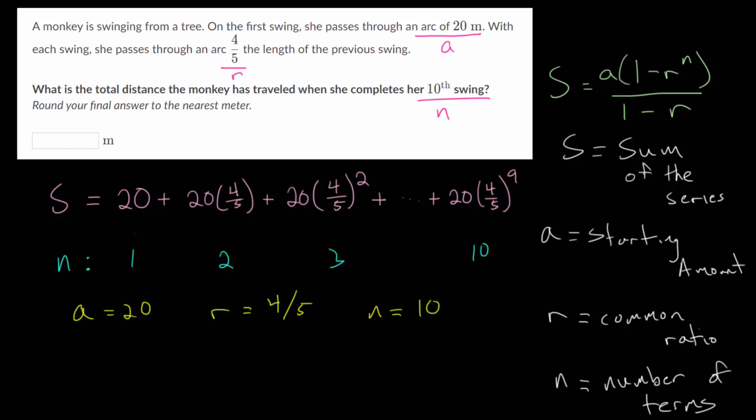So our sum, if we just plug everything in, it will be 20 multiplied by 1 minus 4 fifths, all raised to the 10th power. And then that's divided by 1 minus 4 fifths. So when we actually evaluate this, we're going to get a decimal answer and we need to round it to the nearest meter.